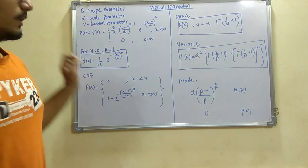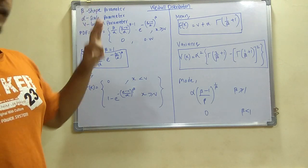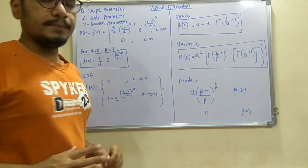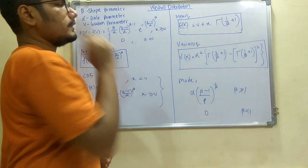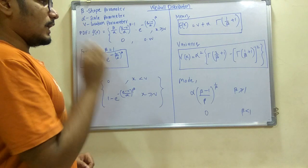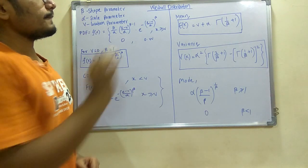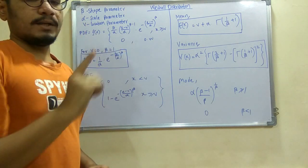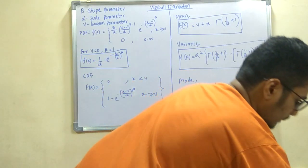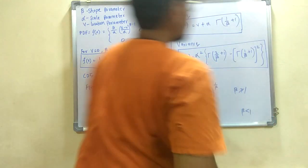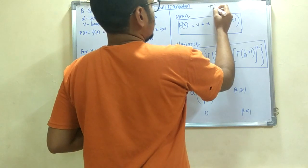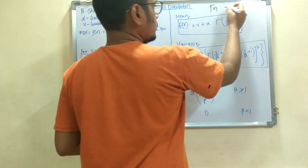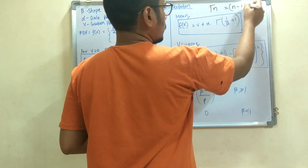Now talking about the mean, variance and mode. Like we discussed in the triangular distribution, we have the mean defined here as E(X) which equals V, the location parameter, plus alpha, the scale parameter, multiplied by gamma of (1 upon beta plus 1). Now this gamma notation in mathematics is defined for n as gamma(n), so the value of this would be (n minus 1) factorial.